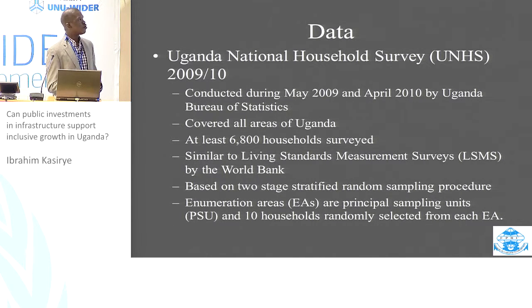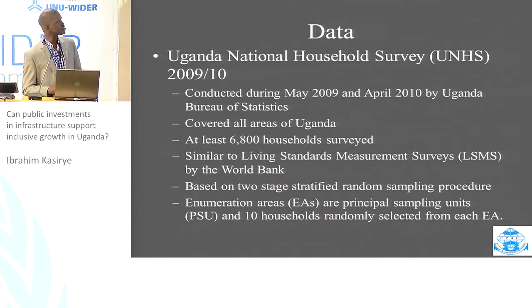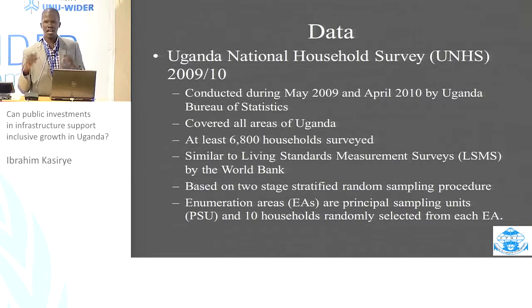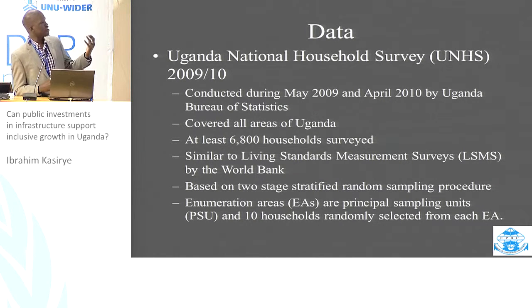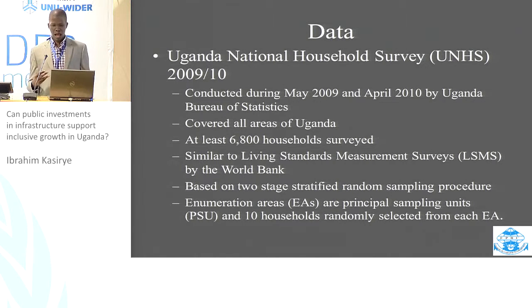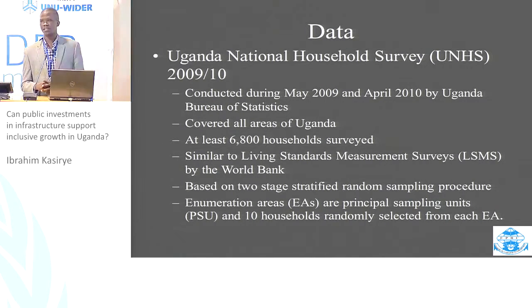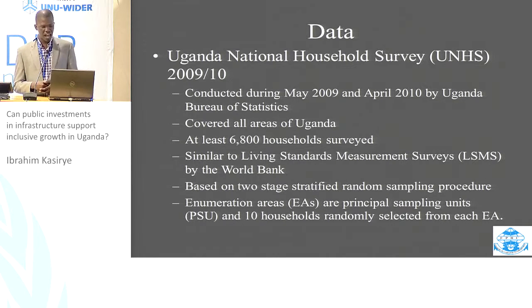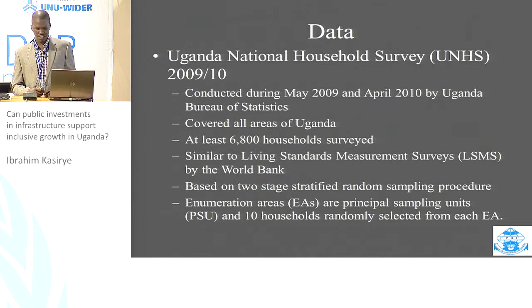In terms of the data, we use the Uganda National Household Survey. There have been other surveys in Uganda since this survey, but these are more or less panel surveys and are far smaller in size. This survey was conducted during May 2009 and April 2010 by the Uganda Bureau of Statistics, and it covered all areas and all geographical regions of Uganda. It is similar to the living standards measurement survey promoted by the World Bank. The sampling strategy is based on two-stage sampling: enumeration areas are the principal sampling unit, and then 10 households are randomly selected from each selected enumeration area.